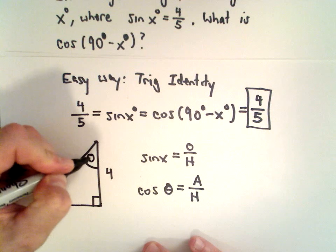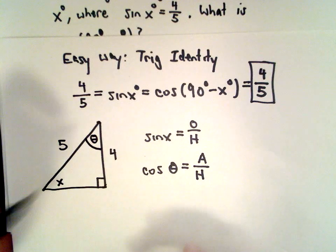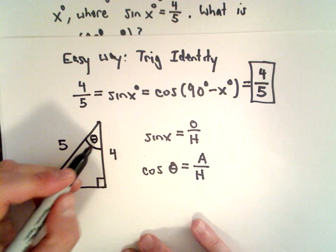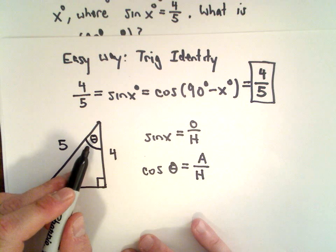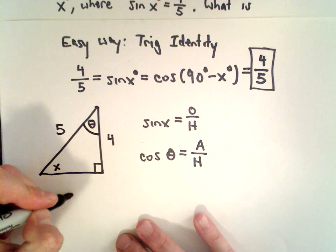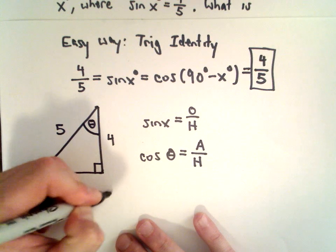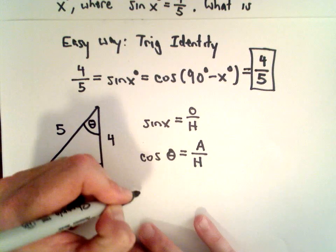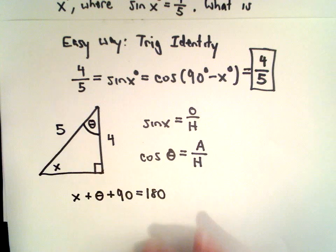Let's call this the angle theta. What is the value of this missing angle theta? Well, we know that if we take x plus theta plus 90, that has to equal 180 degrees.